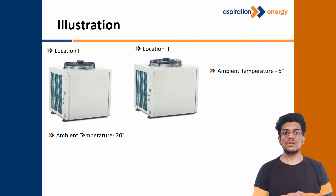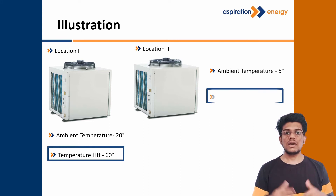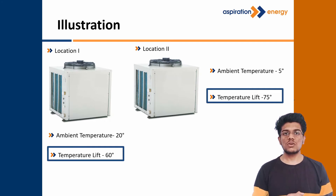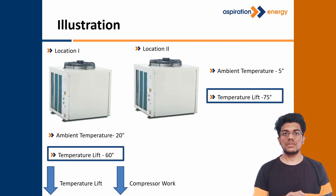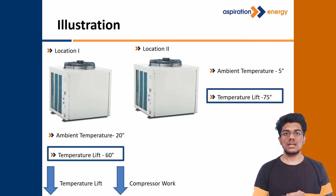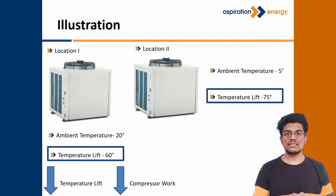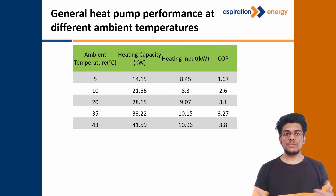As you can see, the temperature lift at location 1 is around 60 degrees, whereas at location 2 it is around 75 degrees. Since we use a fixed speed compressor, the work done by the compressor is also fixed. As the temperature lift at location 2 is higher compared to location 1, the compressor has to do more work. Due to which, the efficiency of the system at location 2 is less as compared to the efficiency at location 1.